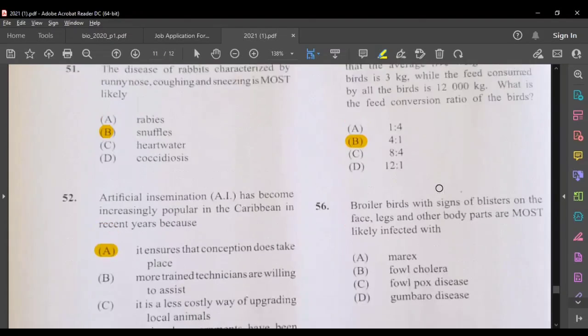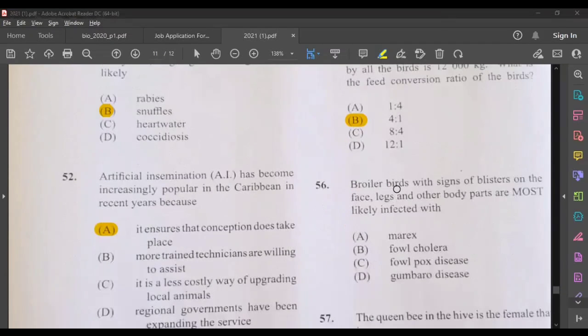Broiler birds with signs of blisters on the face, legs, and other parts of the body are most likely infected with fowlpox disease.